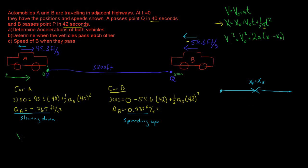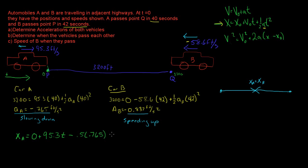The equation for X_A: from the kinematic equations, the final position of A equals the initial position of zero, plus velocity 95.3 times time, minus one-half times 0.765 times time squared. The negative sign comes from the negative acceleration.